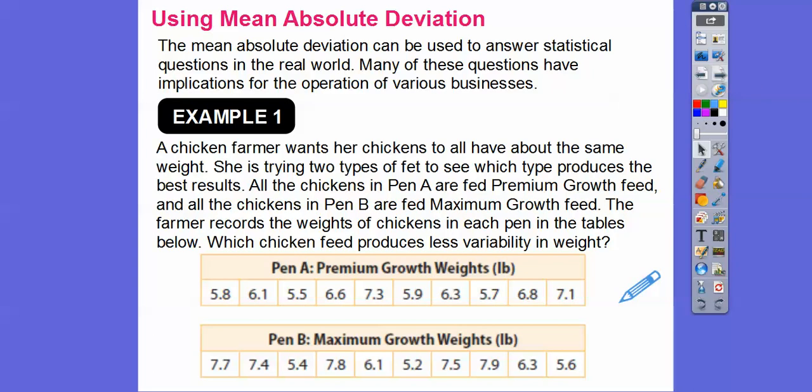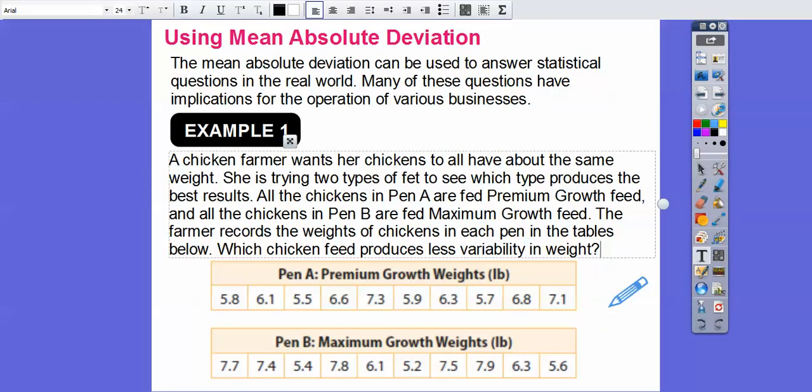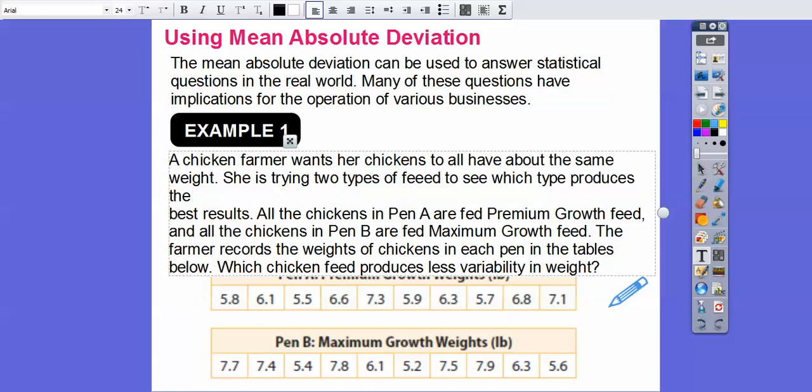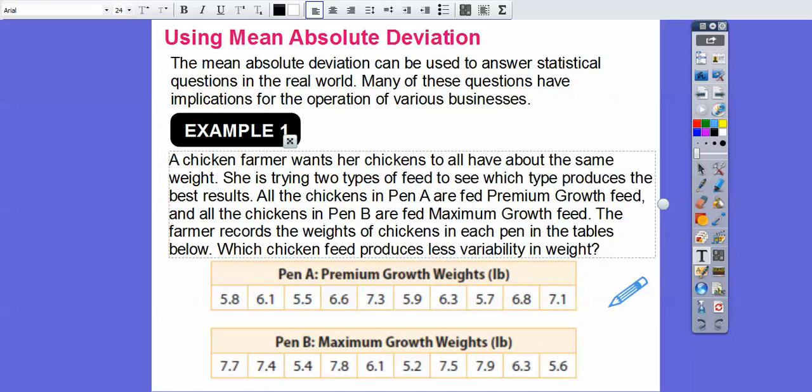A chicken farmer wants her chickens to have all of the same weight. She's trying two types of feed to see which type produces the best results. All the chickens in pen A are fed premium growth feed.